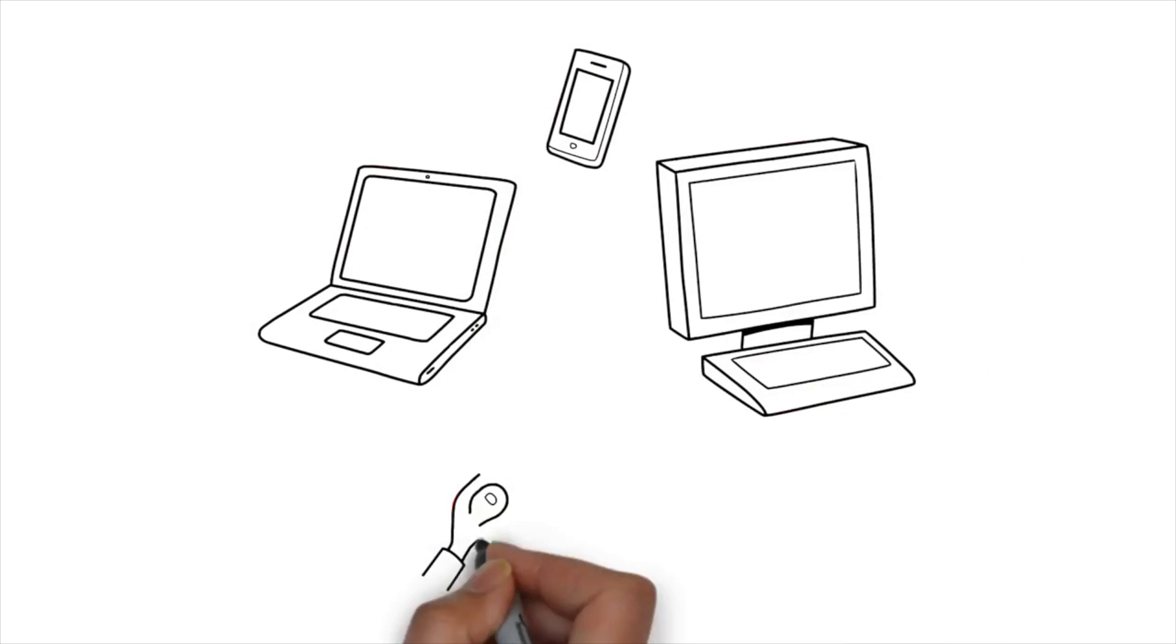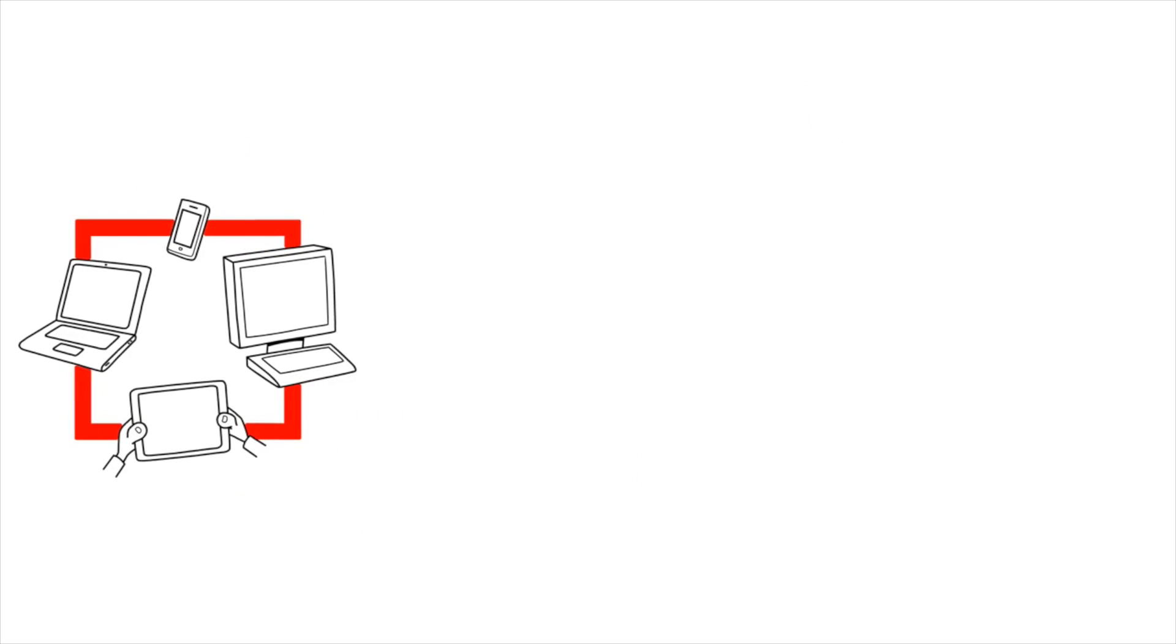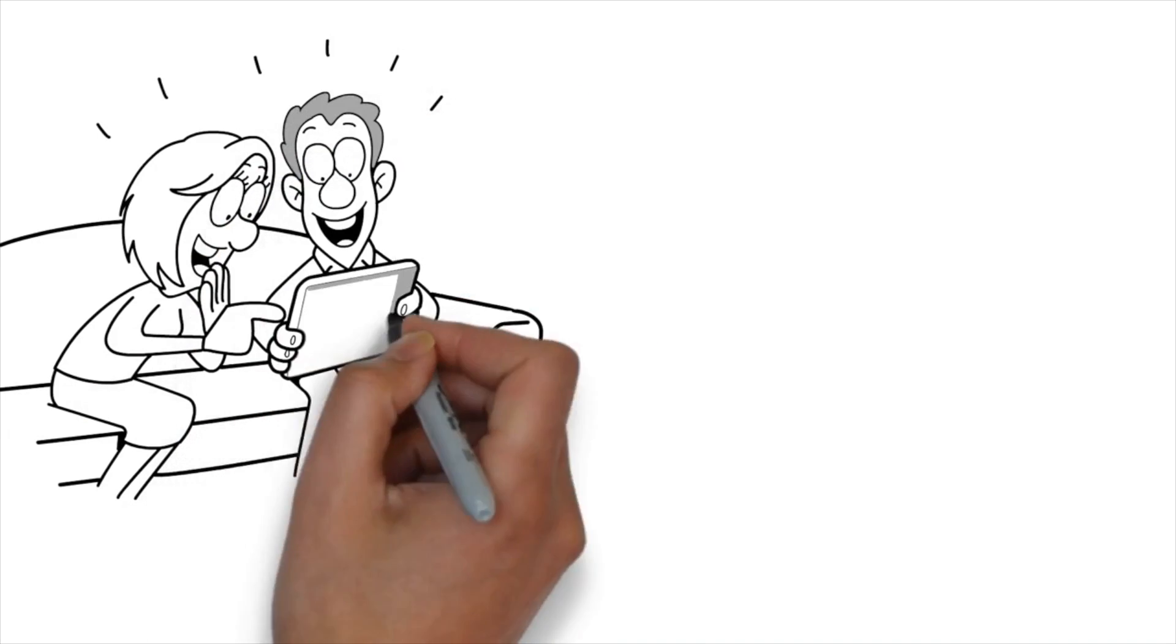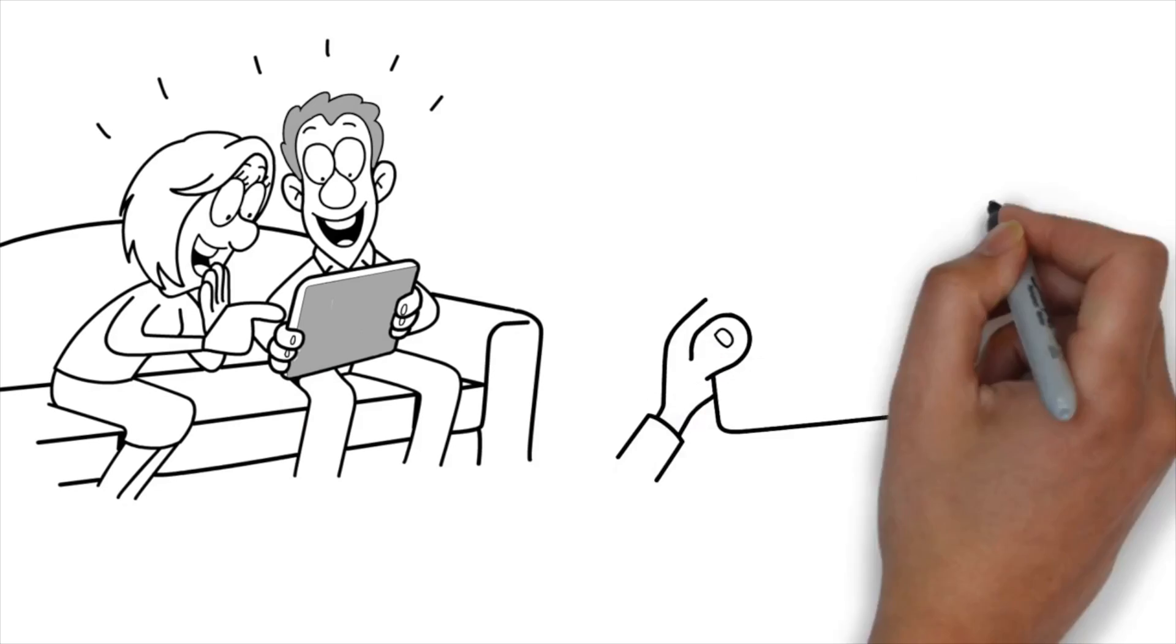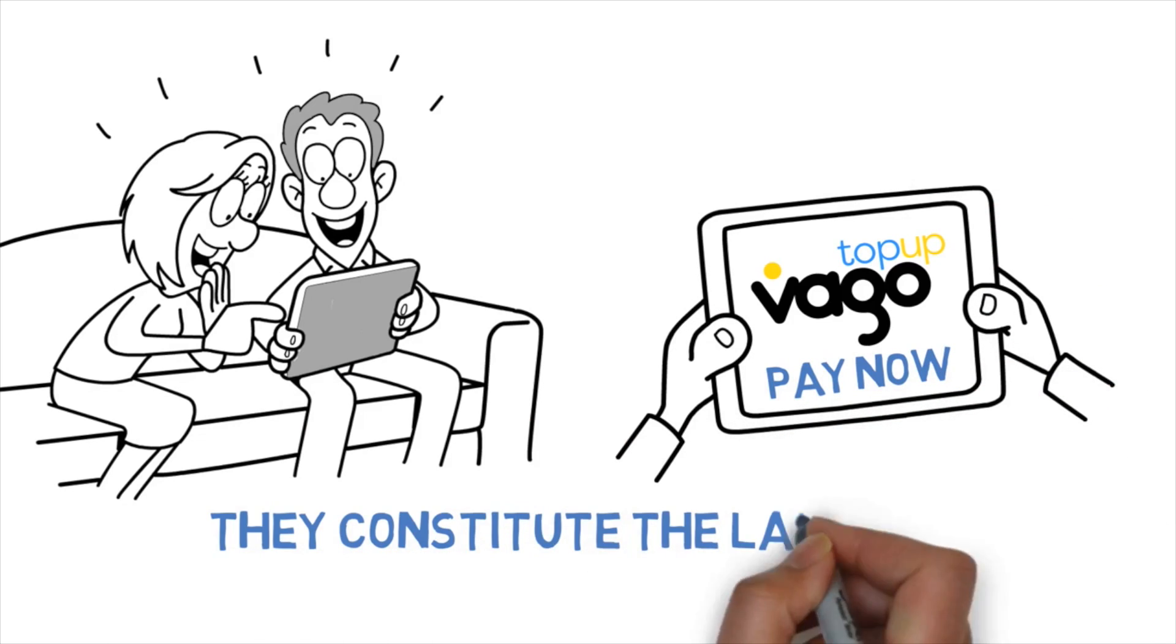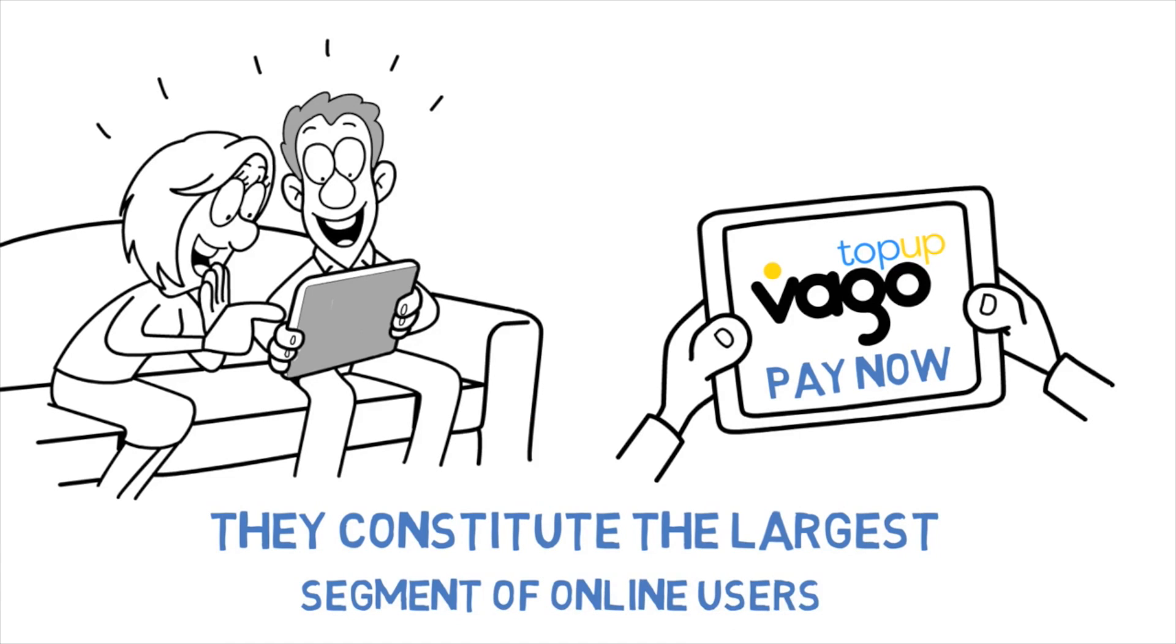This segment is heavily reliant on technology to the point of stubbornness to use mobile devices to do everything. Parents of teens and preteens are already reliant on technology to make payments for their children for takeaway and other school needs. These segments are extremely comfortable with technology and apps. They also constitute the largest segment of online users.